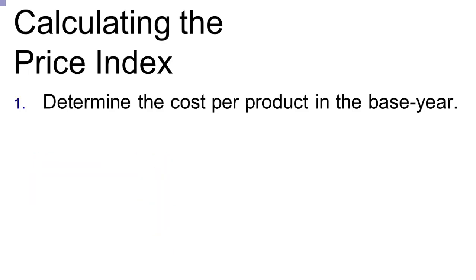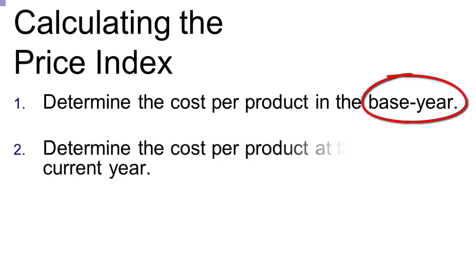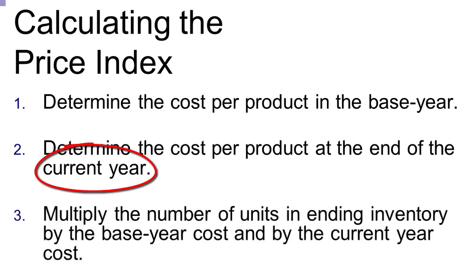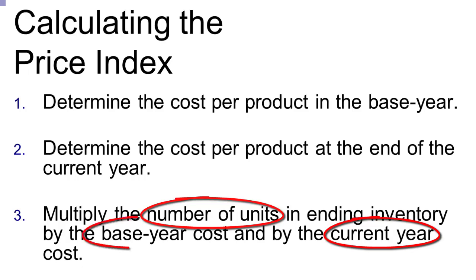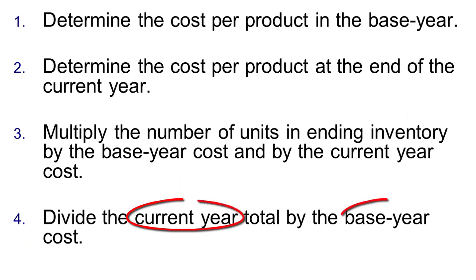If we can relate it all back to one year's prices, it becomes really straightforward to see how inventory has changed. So first, we look at the cost per product back in that base year. Then we figure out the cost per product this year, the year we're trying to get a price index for. Third, we multiply the number of units in ending inventory by the current year price and by the base year price per unit. Finally, we'll divide the current year total by the base year total, and the result will give us our price index.